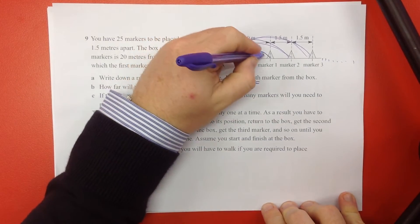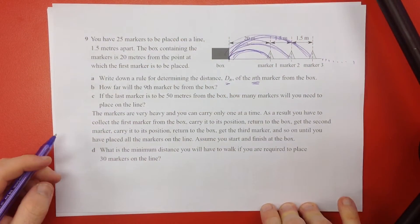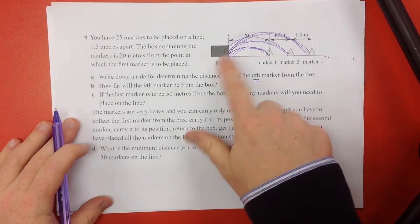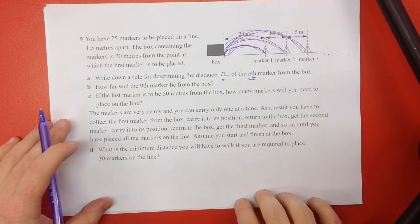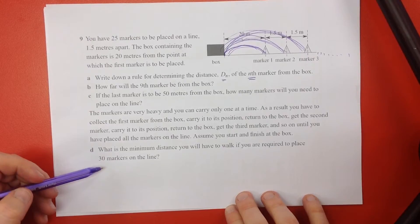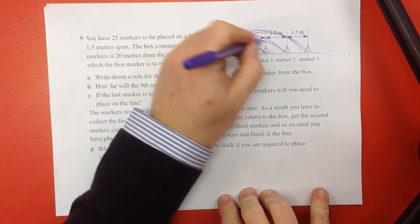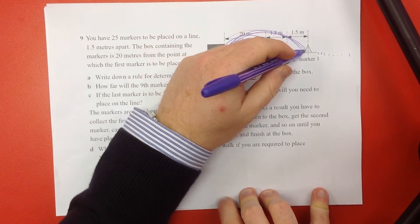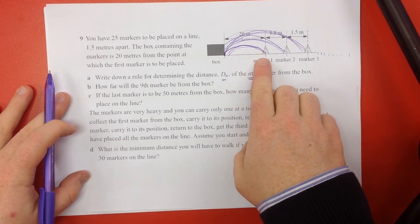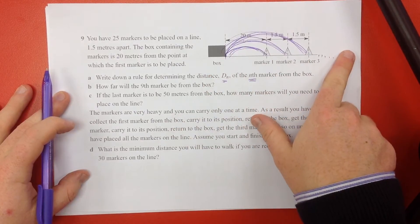You can actually see this distance is covered twice, there and back, and there and back, and there and back. So we might have to double our answer when we find out how far we've gone, because usually we'll just find the sum of these distances. So the question is, what is the distance you'll have to walk if you're required to place 30 markers on the line? So if I'm trying to place 30 markers on, first I've got to go to the first one, and then I've got to go to the second one, and then I've got to go to the third one.